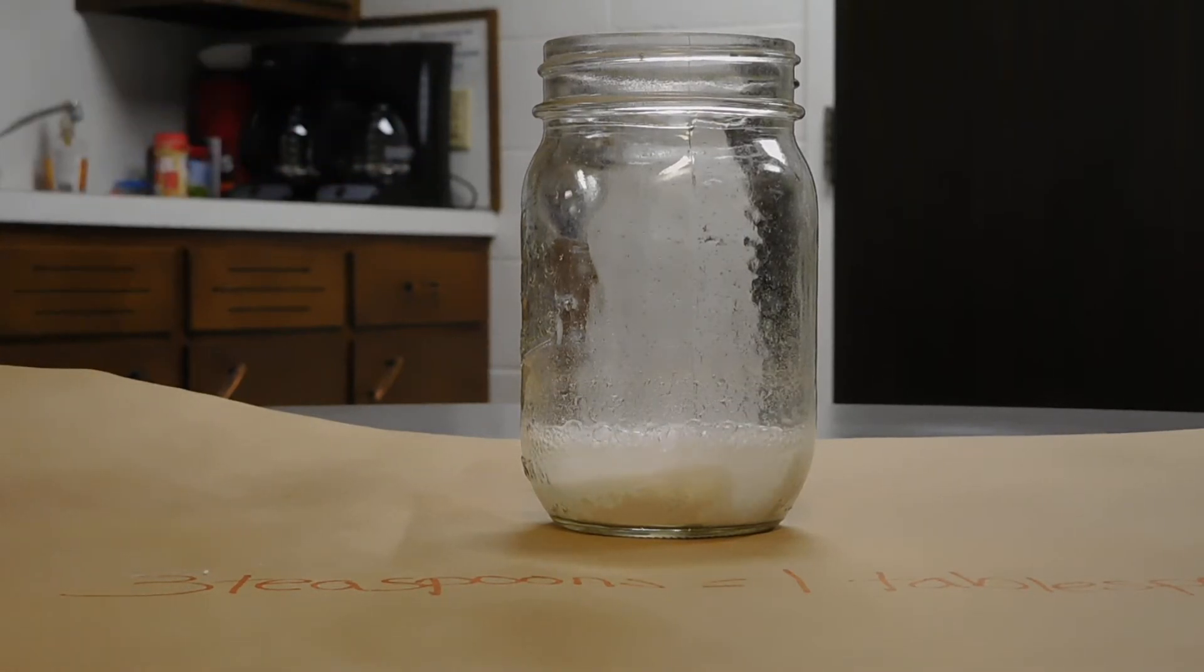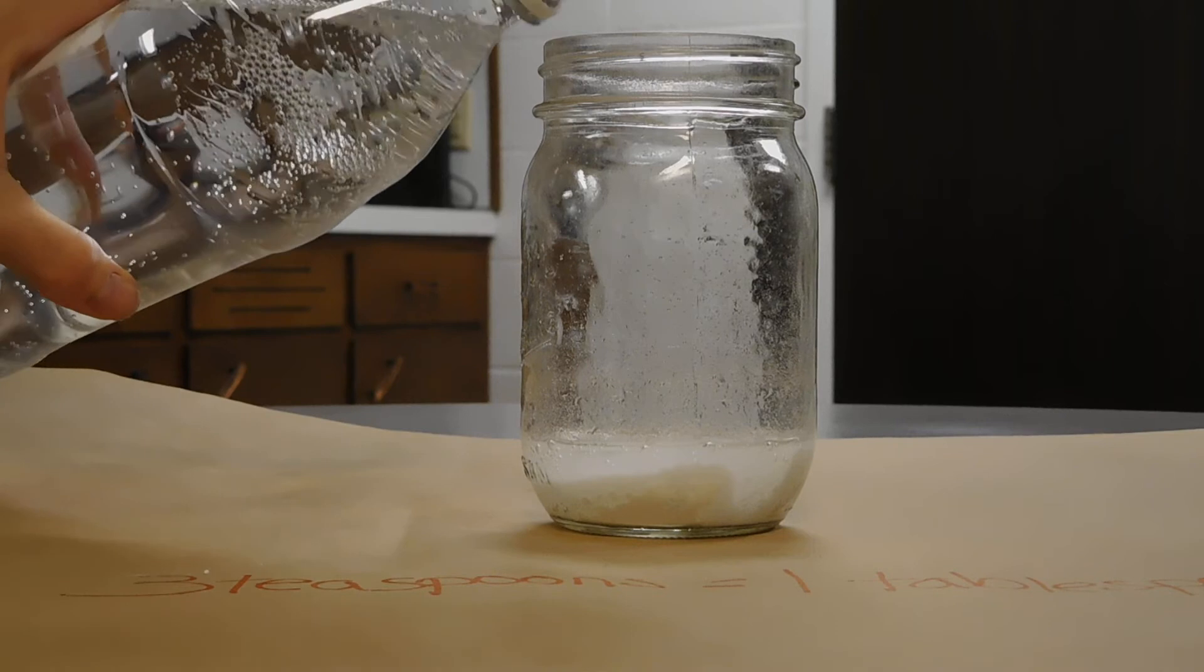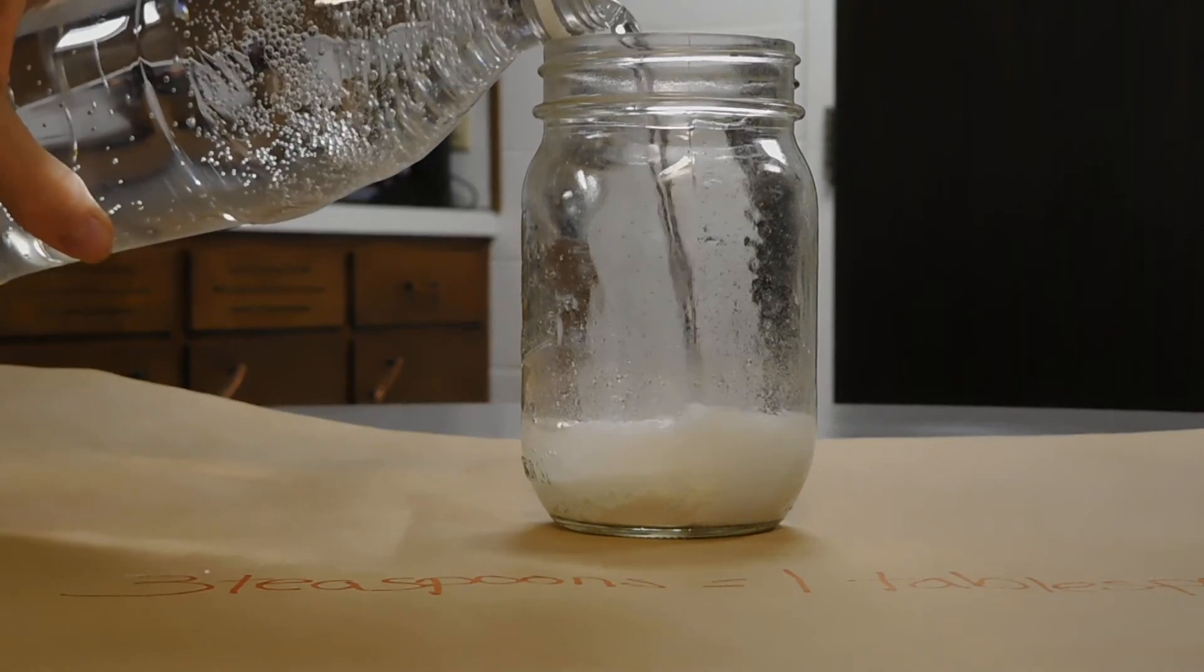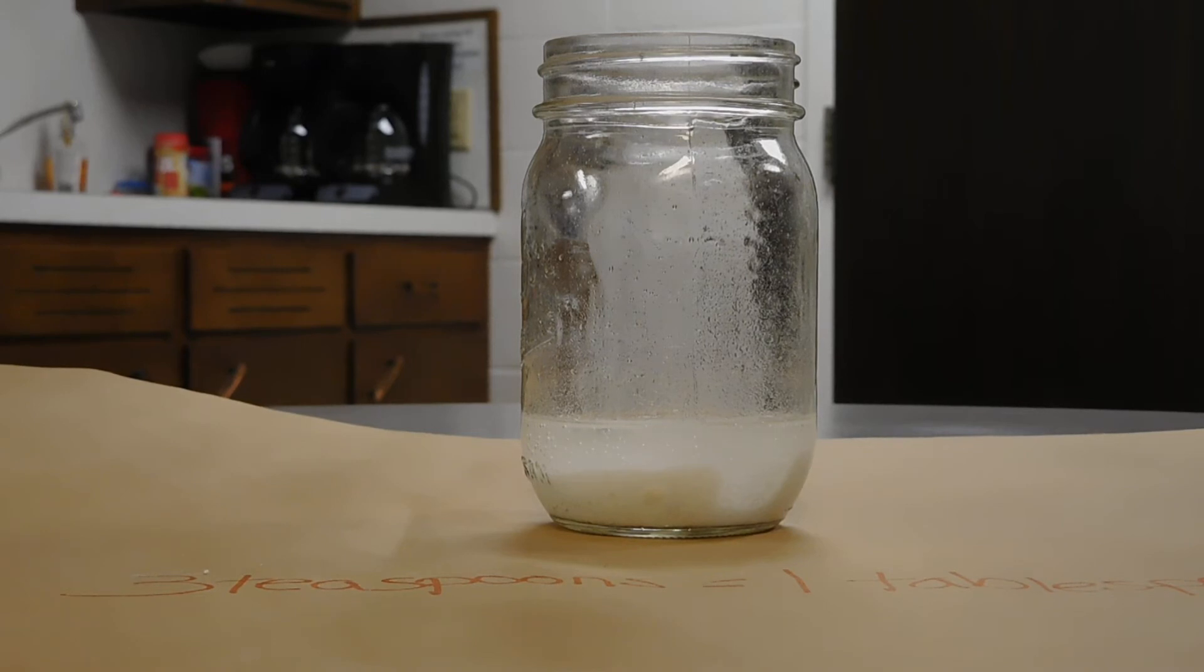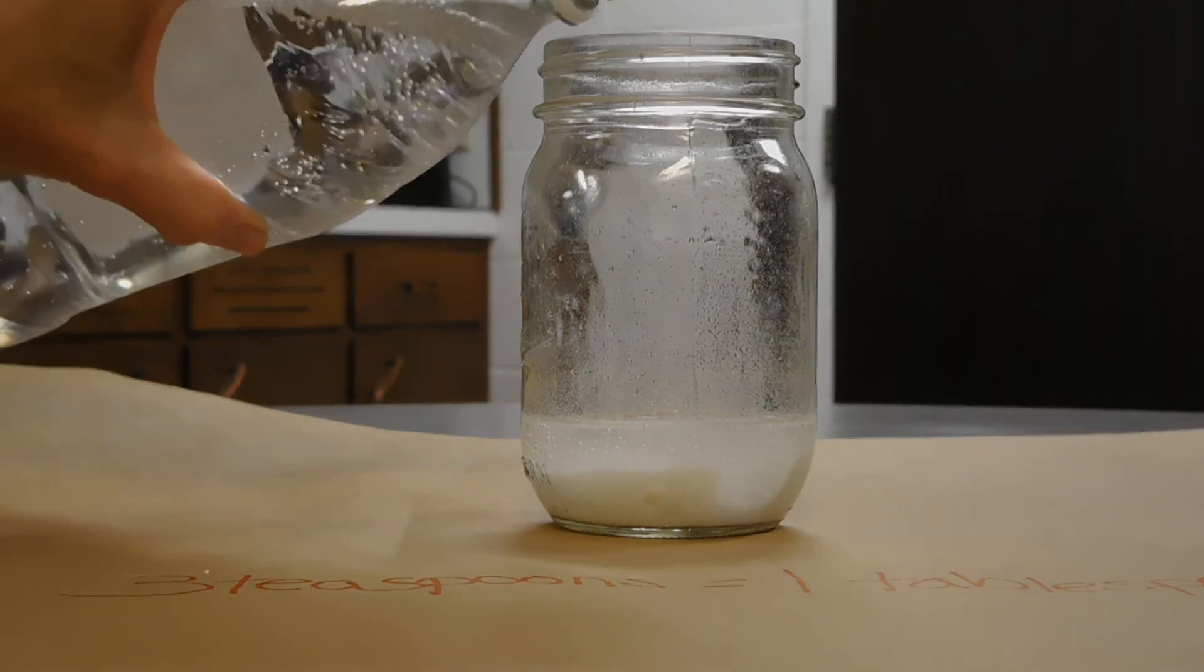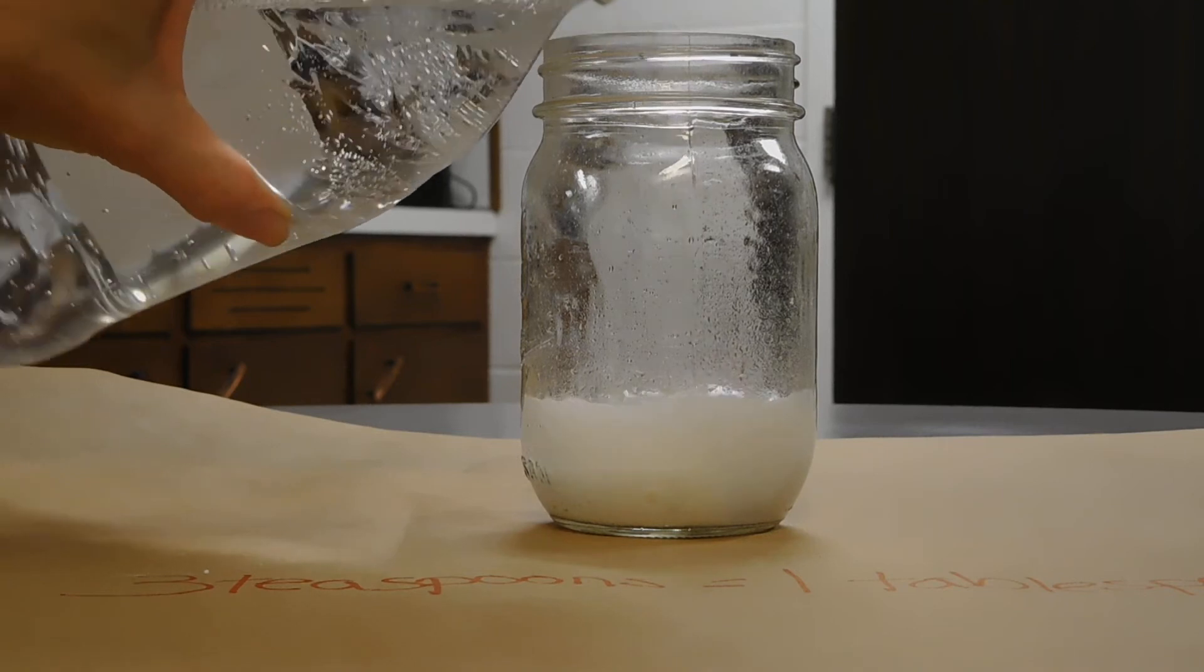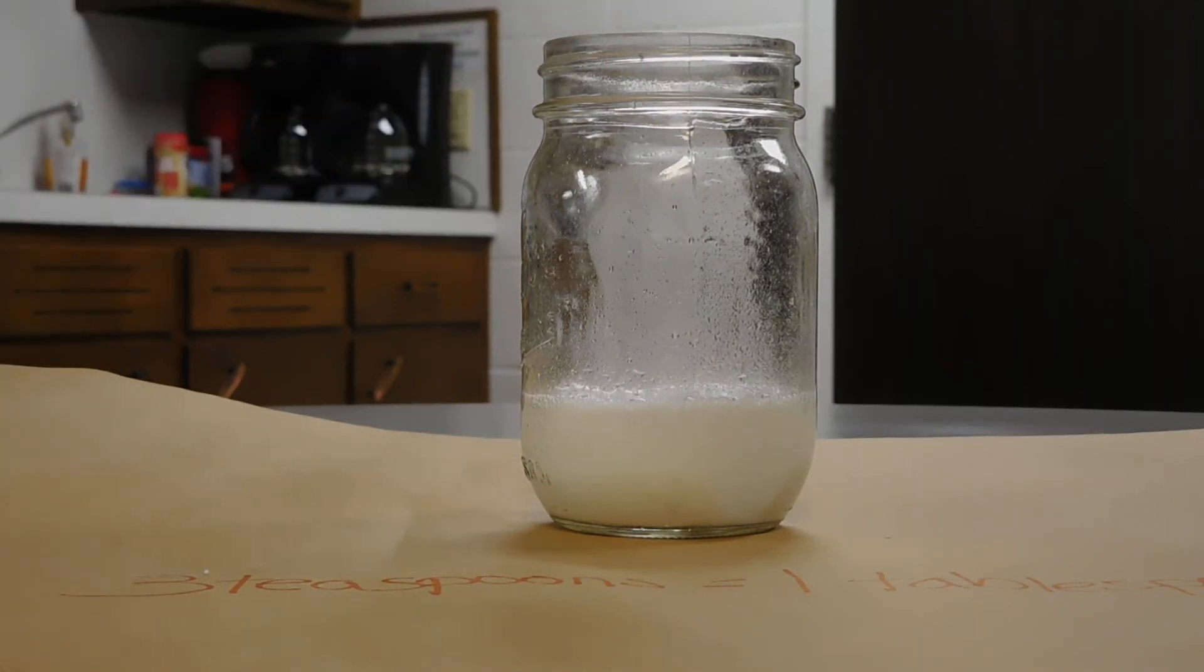I'm going to wait for the bubbles to die down some so I can get a gauge on how much more we need. The next step is to add vegetable oil till we're about three quarters full. And I'm going to add just a little more of the tonic water. There we go. That looks about right to me.